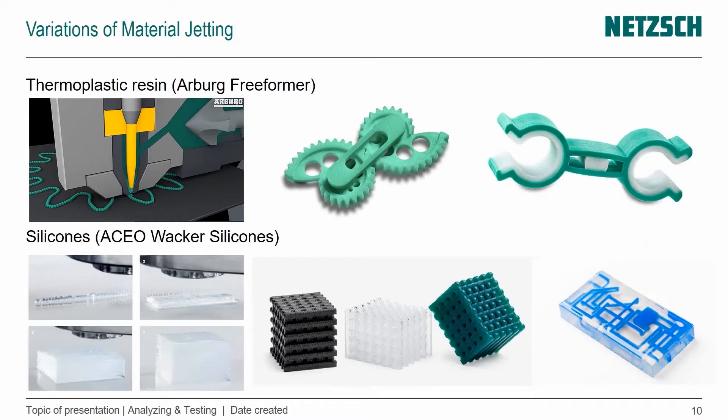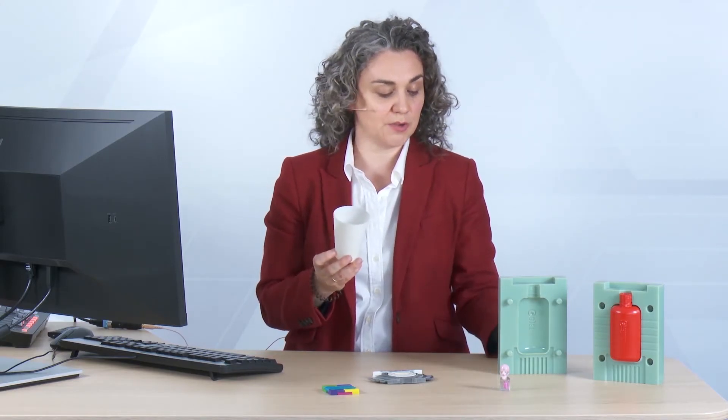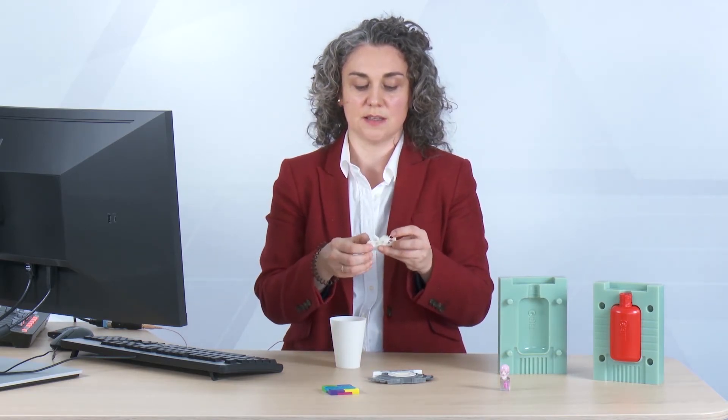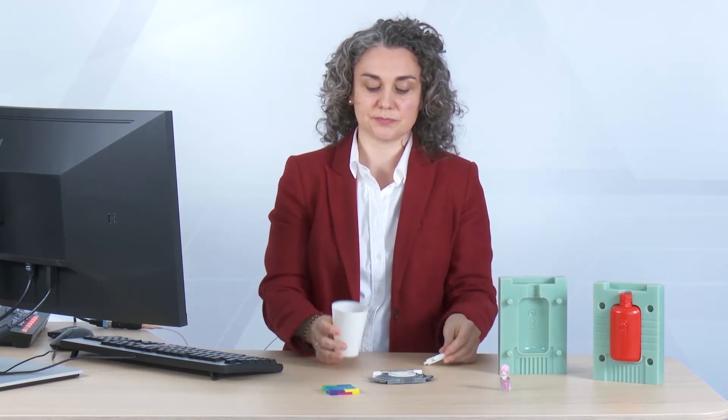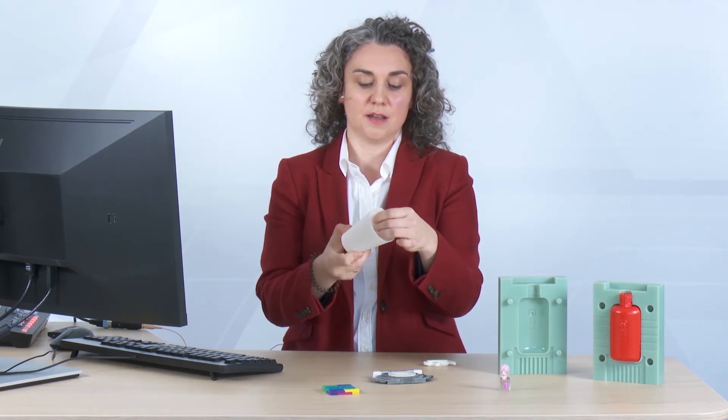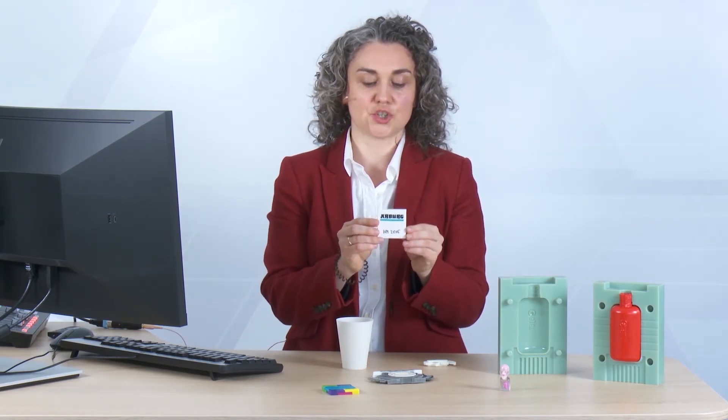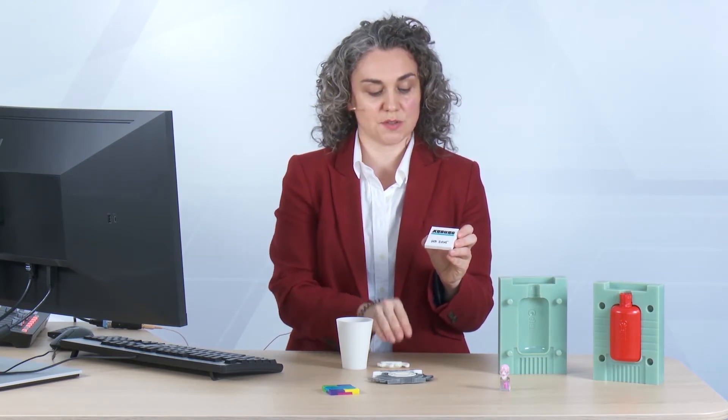For material jetting, there are a couple of variations that use different materials but follow the definition of selectively depositing droplets of material. The first is from Arburg, a company known for producing injection molding machines in Germany. I have examples here — a gear system, a cup showing very thin wall thicknesses, and an example of an injection-molded part that was printed on afterwards to create a logo and replicated handwriting.